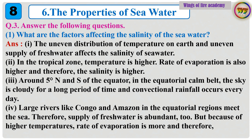Question 3: Answer the following questions. 1. What are the factors affecting the salinity of the seawater? Answer: The uneven distribution of temperature on Earth and uneven supply of fresh water affects the salinity of seawater. In the tropical zone, temperature is higher, rate of evaporation is also higher, and therefore the salinity is higher. Around 5 degrees N and S of the equator, in the equatorial calm belt, the sky is cloudy for a long period of time and convectional rainfall occurs every day. Large rivers like Congo and Amazon in the equatorial regions meet the sea, so supply of fresh water is abundant too.